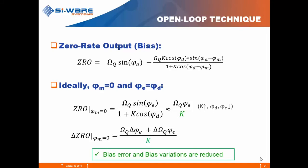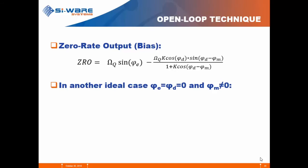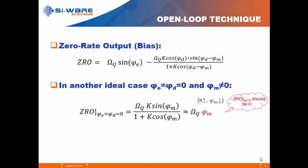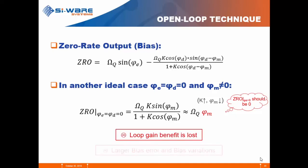This should ideally yield better bias error and reduced bias variations. However, in the practical case where phi_m is not equal to zero — which is realistic — even if phi_e and phi_d are zero, you are back to a zero rate output equal to the amplitude of the quadrature multiplied by the modulation phase error. Any variation in the quadrature amplitude or phase, or large quadrature amplitude, will cause large zero rate output variation. The loop gain benefit is lost and we are back with large bias error and bias variations.